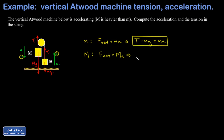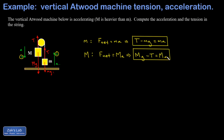For big M: F_net equals Ma. The force of gravity counts as positive the way I set up the coordinate system for this mass, so big Mg minus T equals big M times a. That's our second equation.